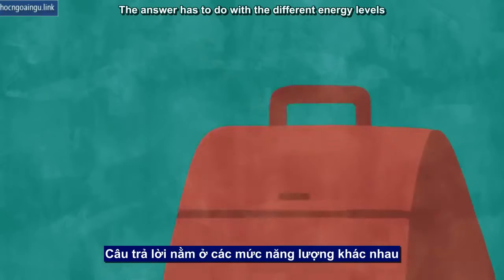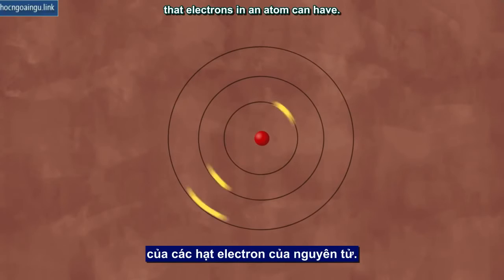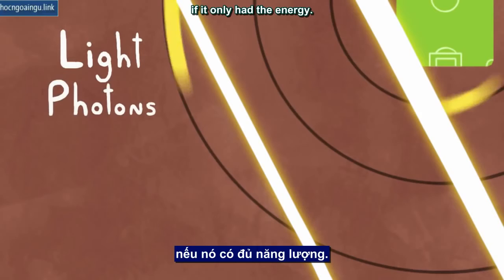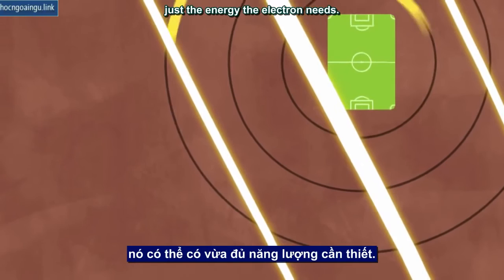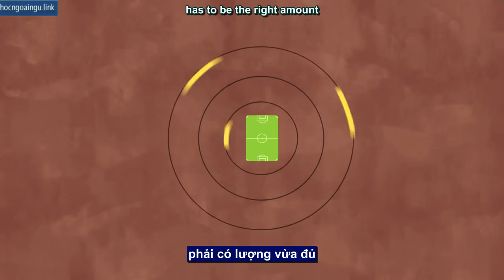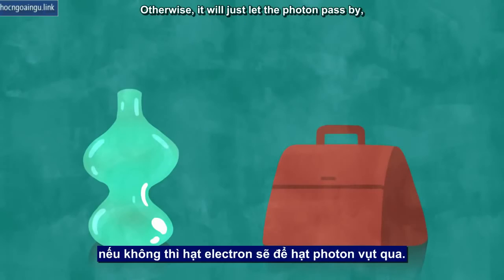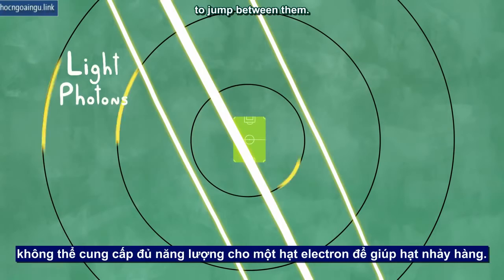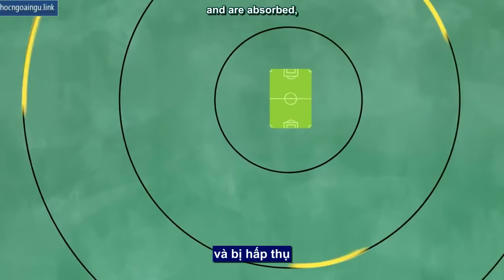The answer has to do with the different energy levels that electrons in an atom can have. Think of these as different rows of seats in the stadium stands. An electron is initially assigned to sit in a certain row, but it could jump to a better row if it only had the energy. Absorbing one of those light photons passing through the atom can provide just the energy the electron needs. But there's a catch: the energy from the photon has to be the right amount to get an electron to the next row. Otherwise, it will just let the photon pass by. And it just so happens that in glass, the rows are so far apart that a photon of visible light can't provide enough energy for an electron to jump between them. Photons from ultraviolet light, on the other hand, give just the right amount of energy and are absorbed, which is why you can't get a suntan through glass.